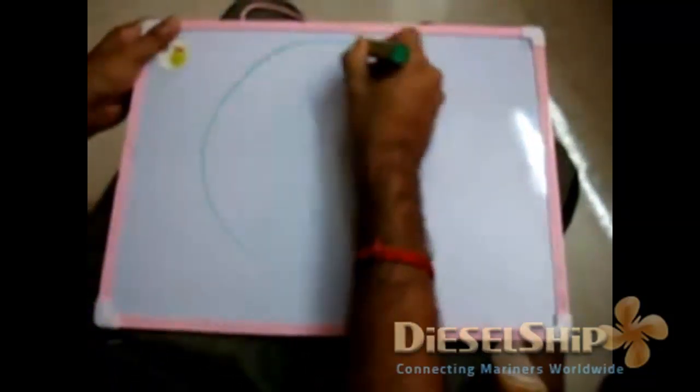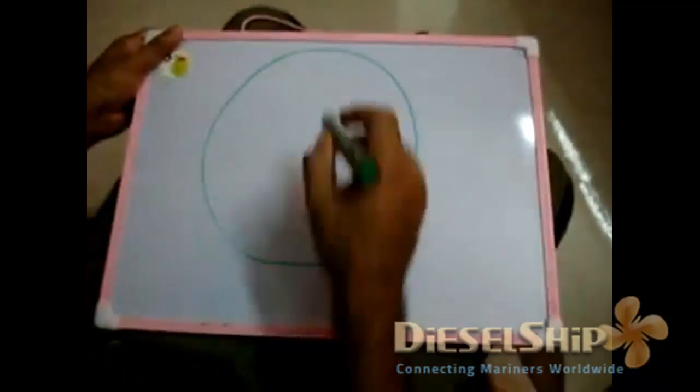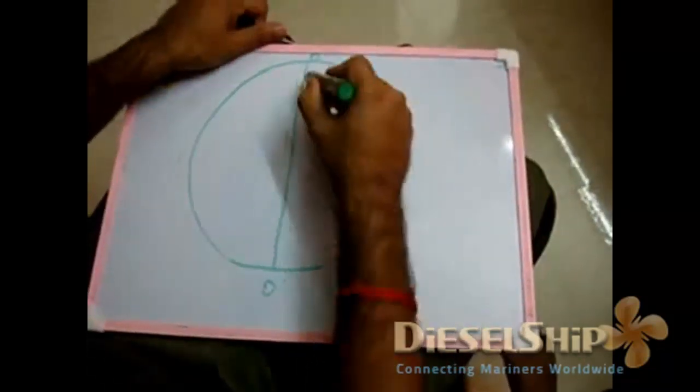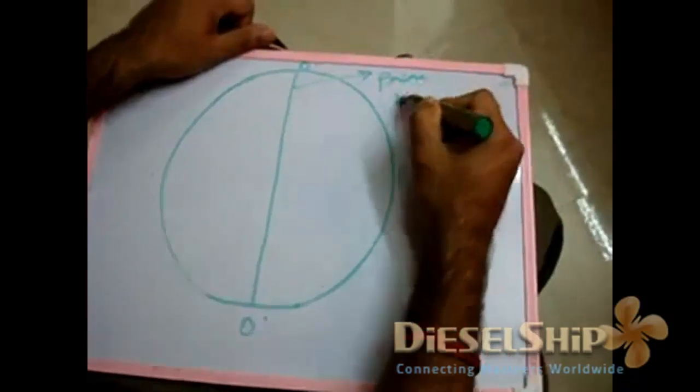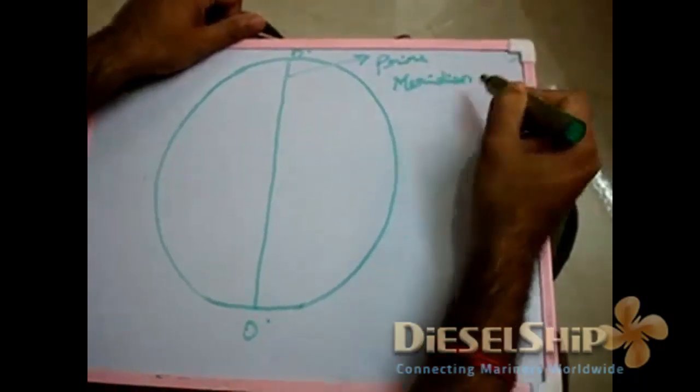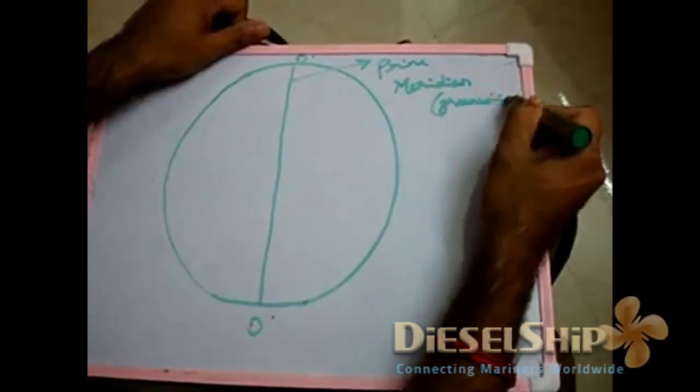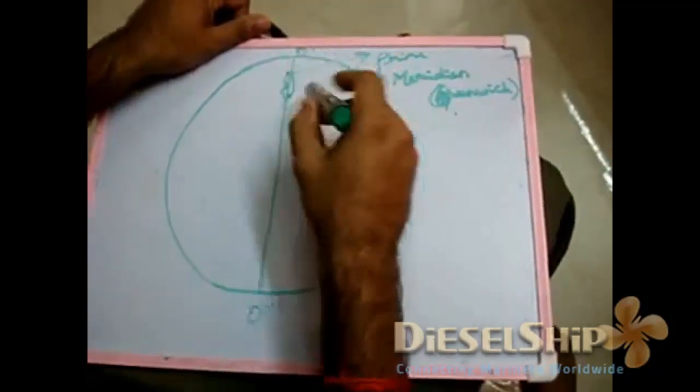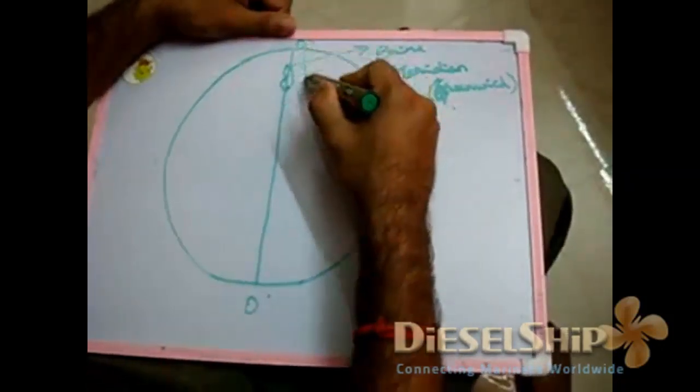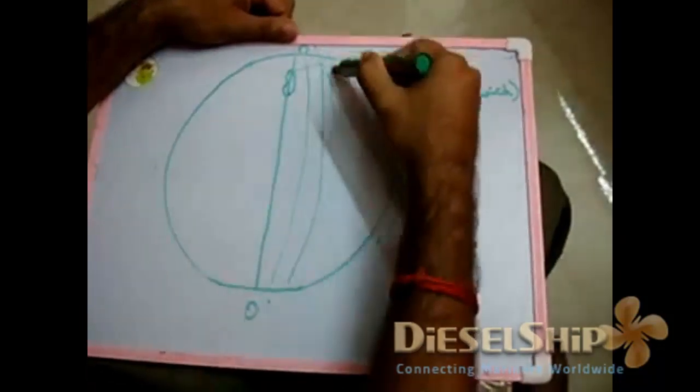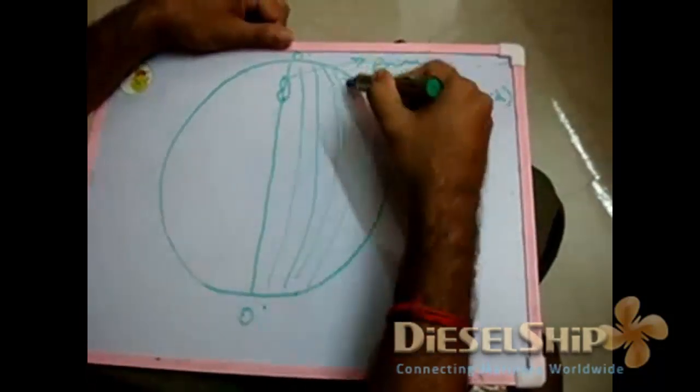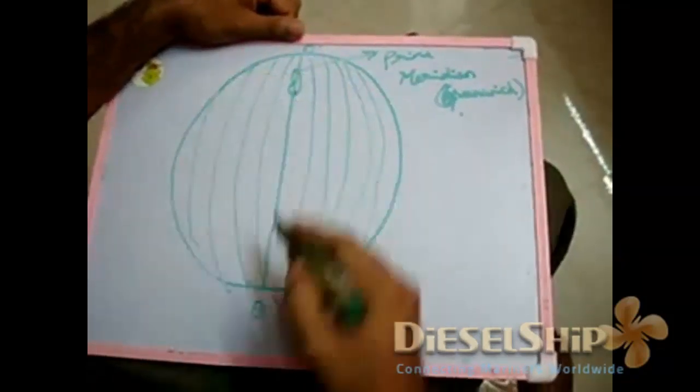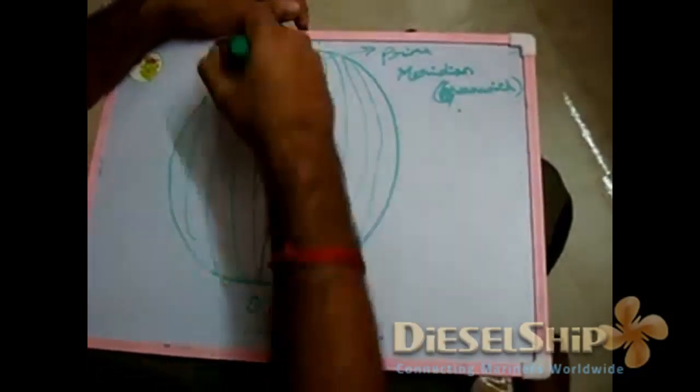Now, as I said, this is zero degree called as prime meridian which passes through Greenwich. Now this is also called as Greenwich Meridian. Greenwich is a place which is located in England somewhere over here. And every longitude pass through like this and they converge at the poles, that is south pole and north pole.